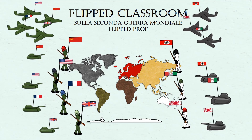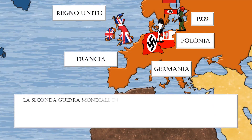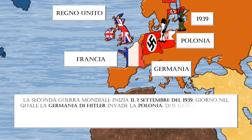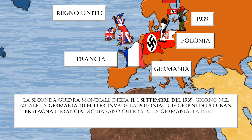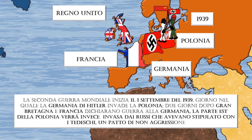Flipped Classroom Summary: World War II. World War II began on September 1st, 1939, the day Germany invaded Poland. Two days later, Britain and France declared war on Germany. Part of Poland would also be invaded by the Russians, who had entered into a non-aggression pact with the Germans.